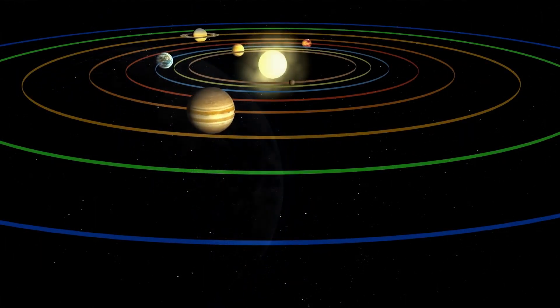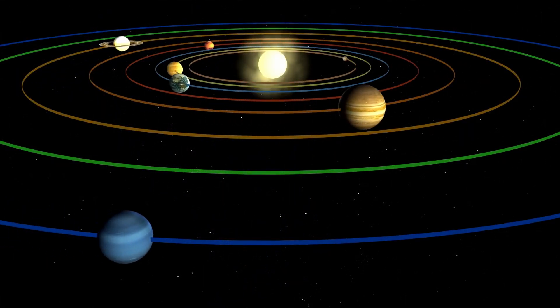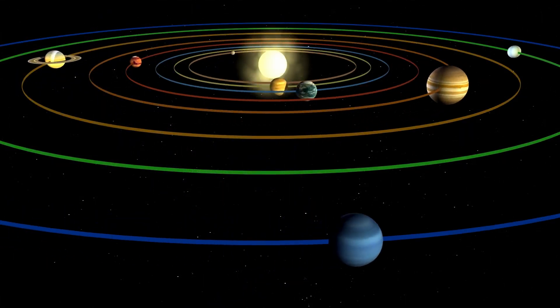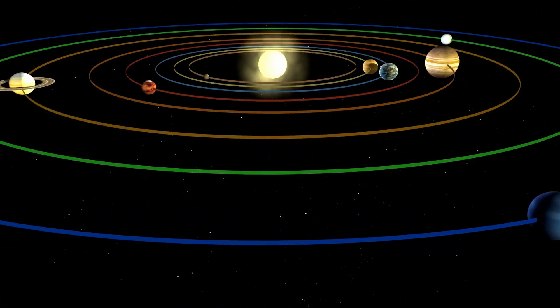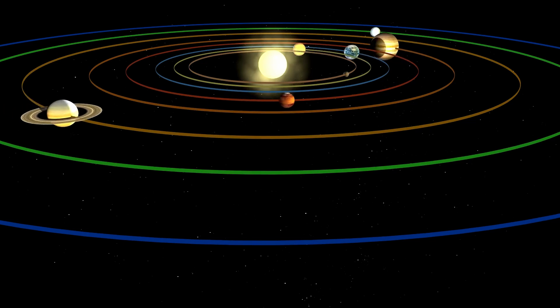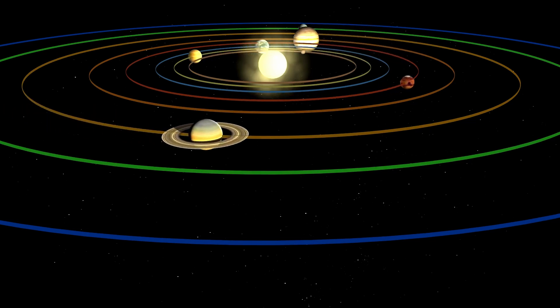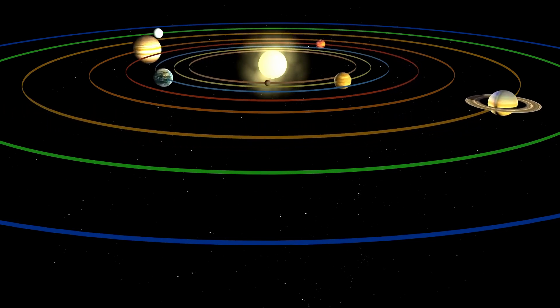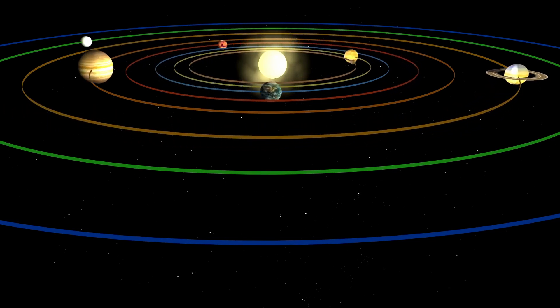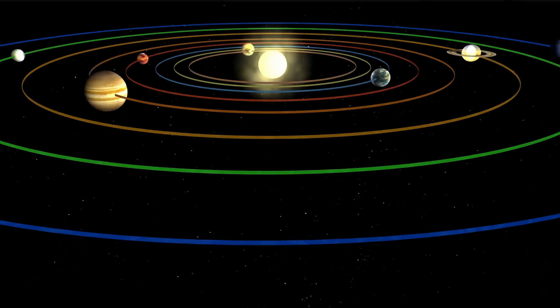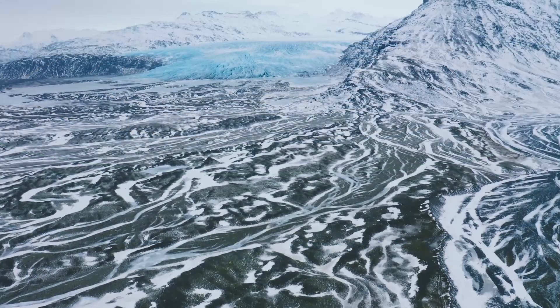The shape of Earth's orbit varies on a 96,000-year cycle, and the planet is cooler when it is pulled by Jupiter's gravity farther from the Sun.